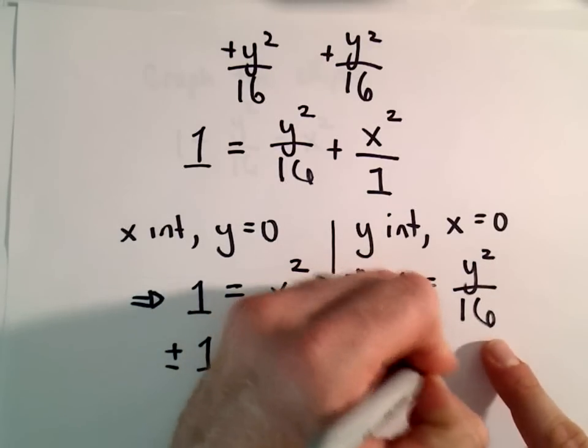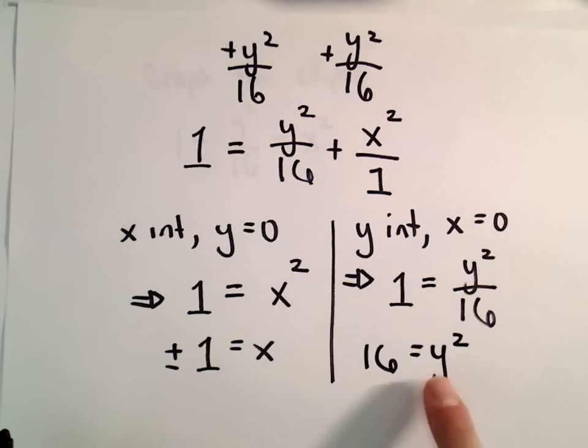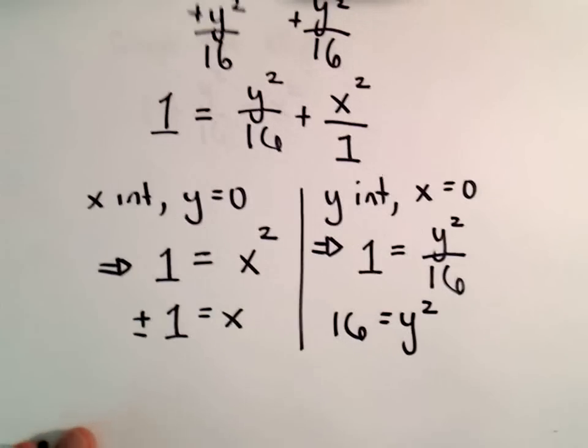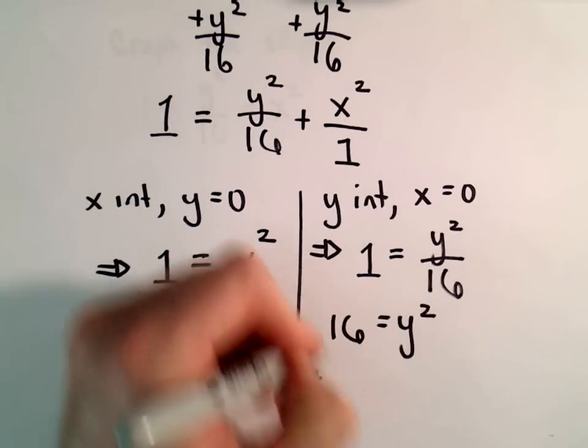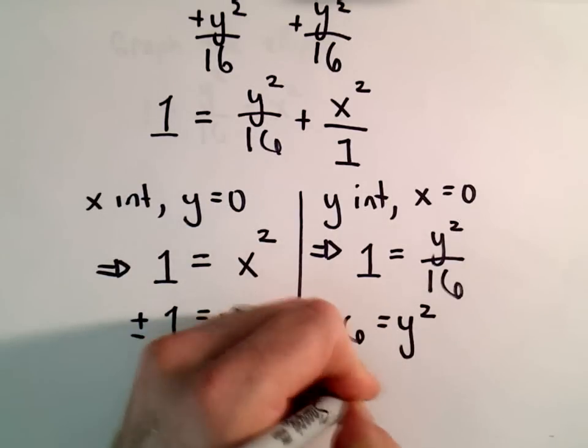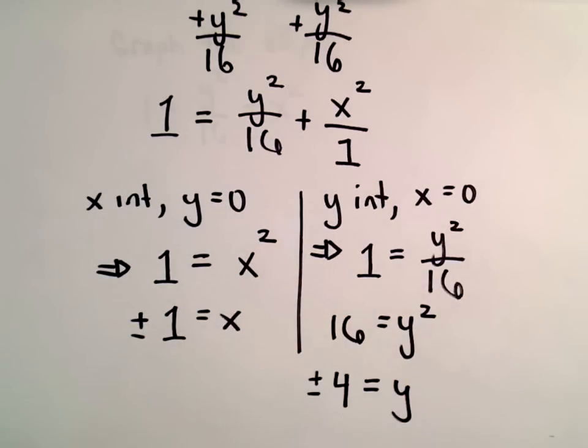Multiply both sides by 16. That'll give us 16 equals y squared. And now if we take the square root of both sides, we'll get positive and negative the square root of 16, which will be 4. And on the left side, we're just left with y.